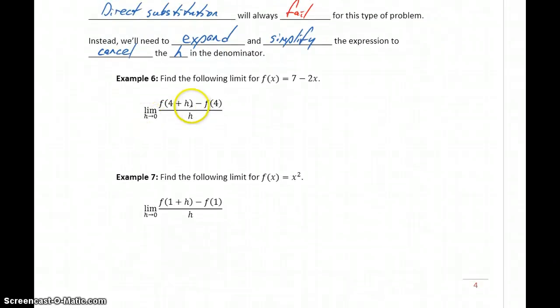Let's take the limit of this difference quotient, where in this case, f of x is 7 minus 2x. The first thing we want to do is take that difference quotient, and instead of writing it in the form of f of whatever, actually plug in our function, that evaluated expression.